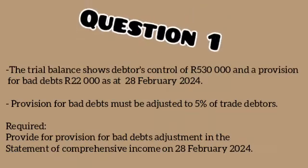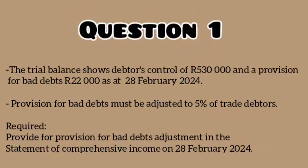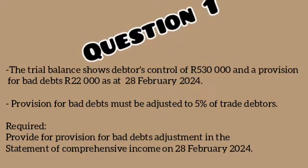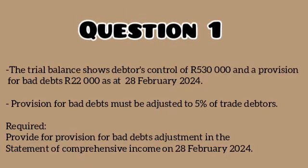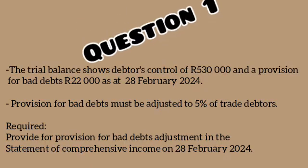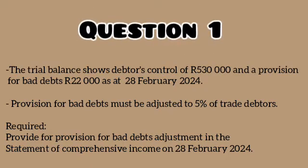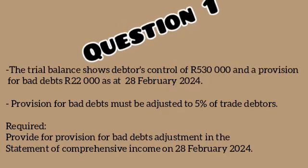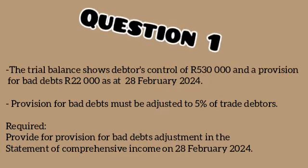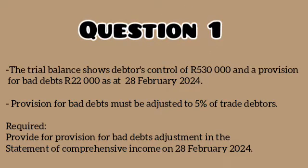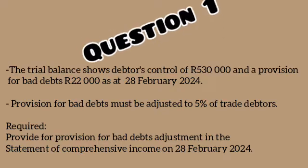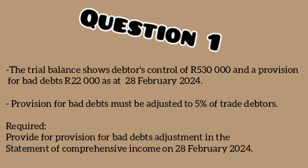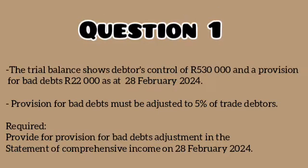The trial balance shows a debtors control of R530,000 and a provision for bad debts of R22,000 as at 28 February 2024. Provision for bad debts must be adjusted to 5% of trade debtors. Provide for the provision for bad debts adjustment in the Statement of Comprehensive Income on 28 February 2024.